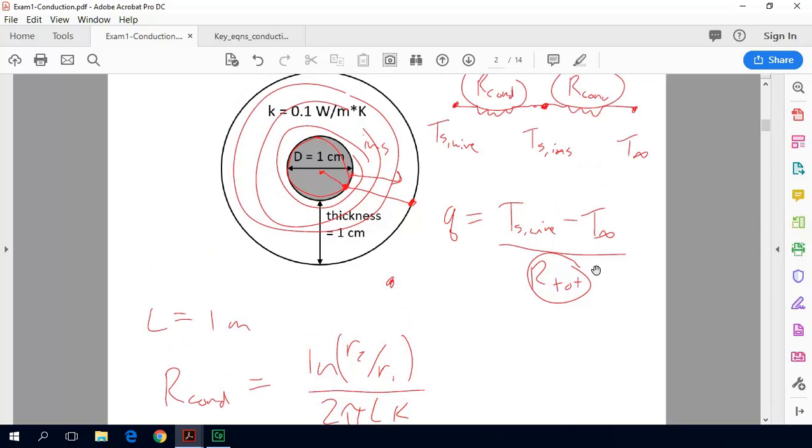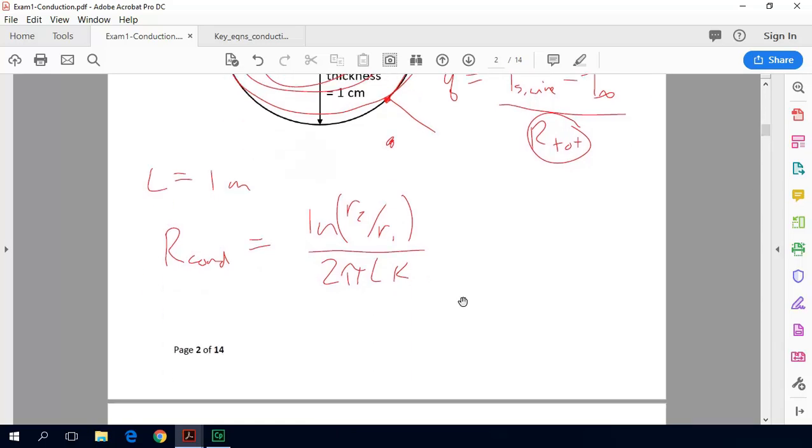So even though it's a cylindrical system, convection is a little bit different - convection is just really happening at this interface. So we don't have to think about that changing area normal to heat transfer, we just have to think about it going from this interface outward. So our convective thermal resistance is the same whether it's for a plane wall or a sphere or a cylindrical wall. It's just that our convective thermal resistance is just equal to 1 over H times A.